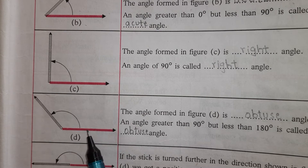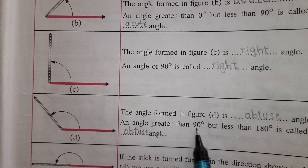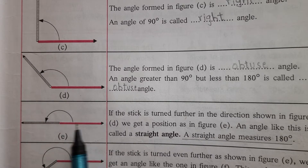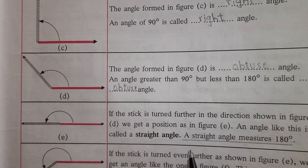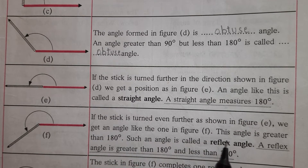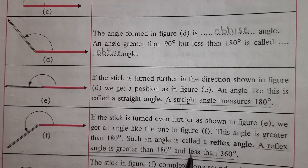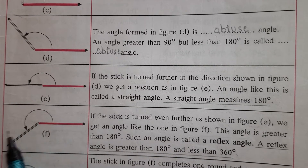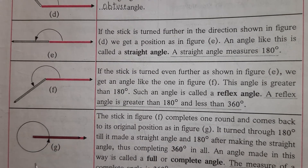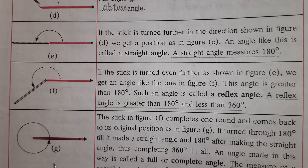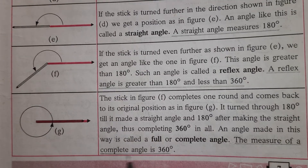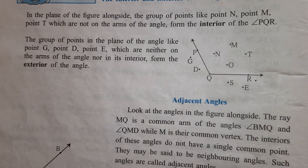Next is obtuse angle — greater than 90, less than 180. Then straight angle — both rays are exactly opposite to each other, measure is 180 degrees. Next is reflex angle — greater than 180, less than 360. And last is complete angle — when both rays complete one full round, measure is 360 degrees. These are the seven types of angles.